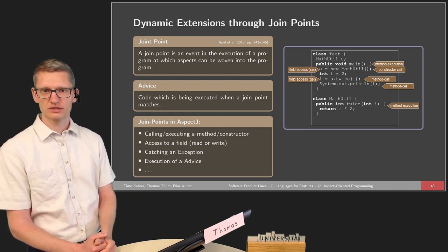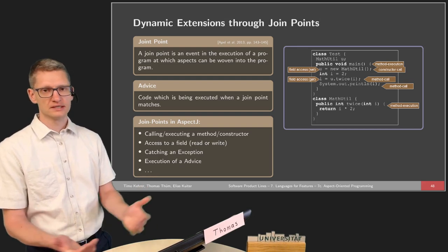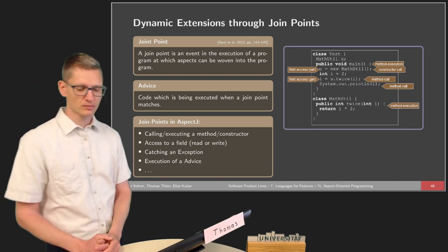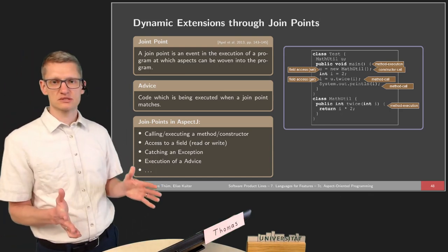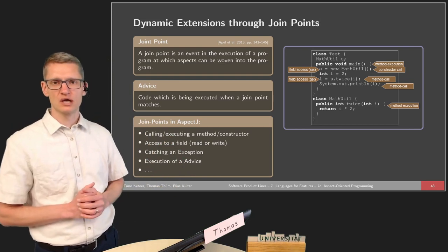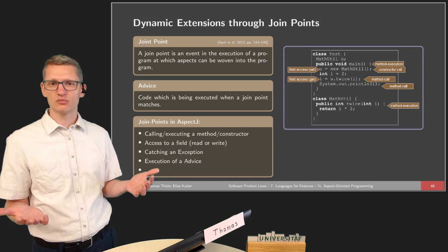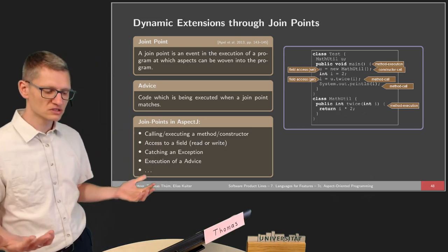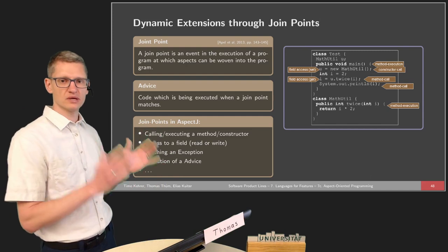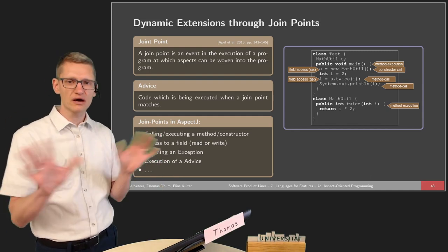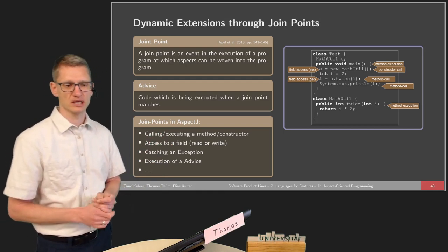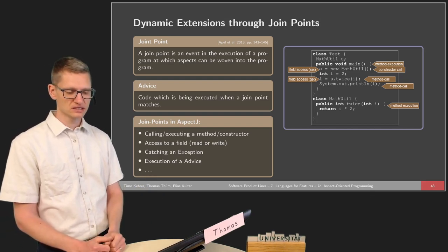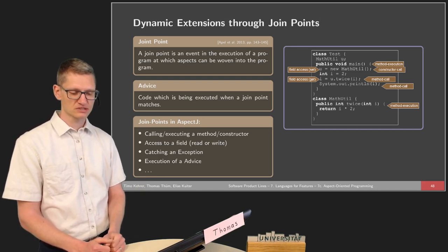But only adding static extensions via intertype declarations is typically not enough. We've seen this already in the feature-oriented world — sometimes we also want to override existing methods. The interesting point about AspectJ is that there are many positions in the control flow where we can insert new code, while in feature-oriented programming the only thing made possible is overriding existing methods. The overall goal is that we can apply any change from an aspect to an existing program without any preplanning, without anything that needs to be manipulated in the base program. This leads to the notion of a join point — an event in the execution of a program at which aspects can be woven into the program.